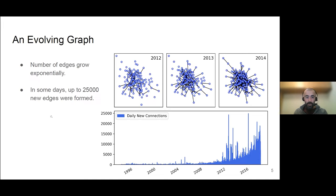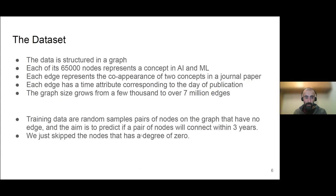The network is huge. So it has in 2017 had about 7 million edges. This is just a very small subsample to show you how these concepts merge together and co-appear in these papers. And they grow exponentially. In some days, like a day in 2016, about 25,000 of these concepts has appeared in the network. 25,000, a very high number.